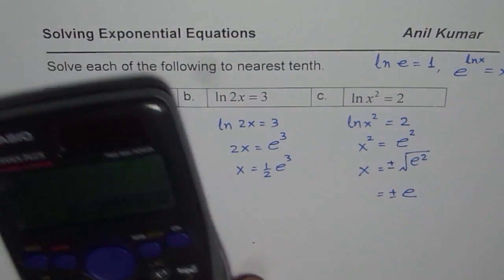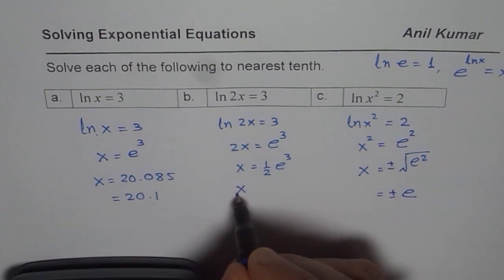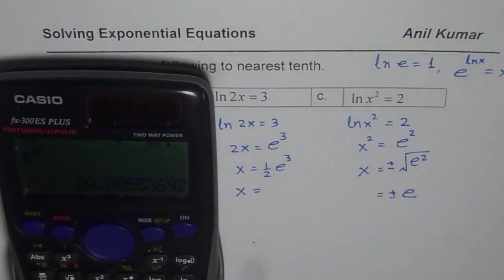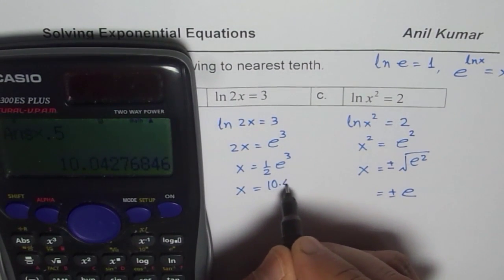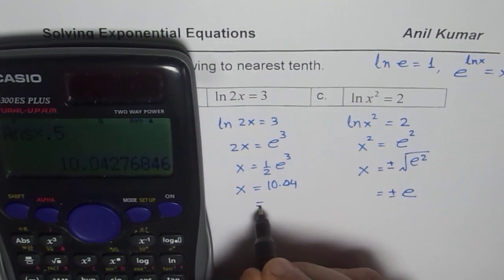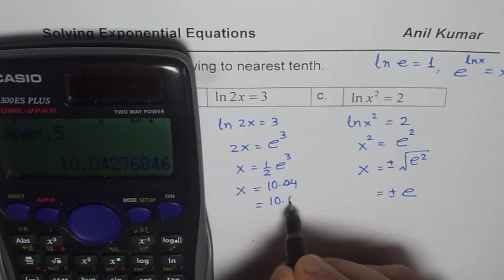Now in this second case, it is half of this. So we could write this as x equals, in this case, we will just 2 times 0.5. So we get half of that which is 10.04. So let me write this rounding to tenth place as 10.0.